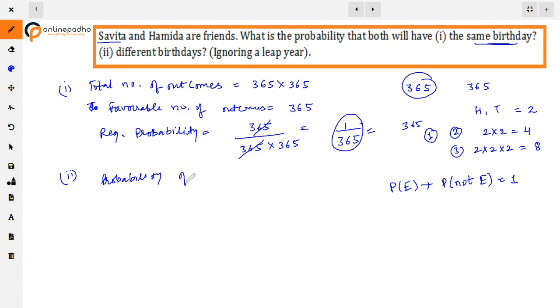Probability of having different birthdays will be equal to one minus probability of same birthday. That is one minus one upon 365. If we take LCM, 365 minus 1, that is 364 by 365. So in this part, our answer will be 364 upon 365.